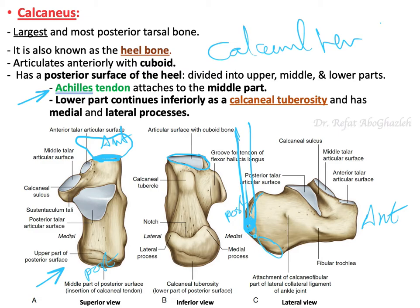Continuing inferiorly along the posterior surface: the lower part is known as the calcaneal tuberosity, which gives rise to two processes — a medial process and a lateral process — with a notch in between.